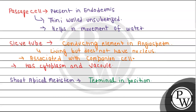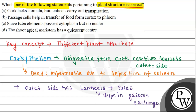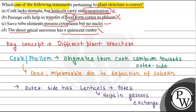So the correct answer is Option A: cork is dead but lenticels carry out transpiration — this is the correct statement. Option B about transfer of food from cortex to phloem is incorrect. Option C is incorrect. Option D about the position of the shoot apical meristem is incorrect. I hope you understood it well, thank you all, all the very best.